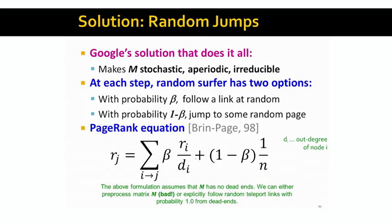So basically, Google's solution to PageRank and to random surfer interpretation of PageRank was to introduce random jumps. So the idea is that we want to take matrix M, make it stochastic, aperiodic, irreducible, all this is achieved by slightly modifying our random walking process, where at each step a random surfer has two options. With probability β, the random surfer goes and follows a random outlink. And with probability 1 minus β, the random surfer jumps to some other page at random.